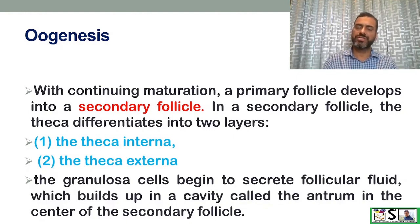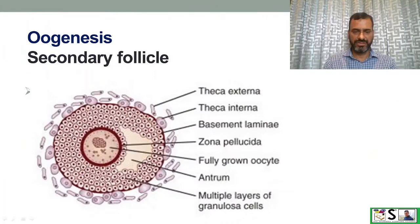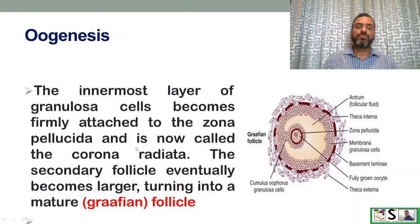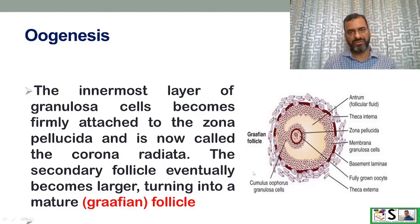In the secondary follicle, granulosa cells secrete follicular fluid that builds up in a cavity called the antrum. The innermost layer of granulosa cells becomes firmly attached to the zona pellucida and is now called the corona radiata. The secondary follicle eventually enlarges into the mature Graafian follicle.